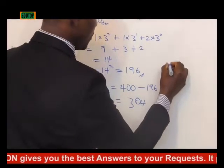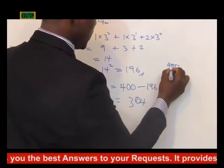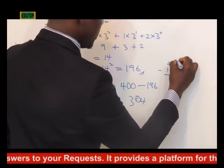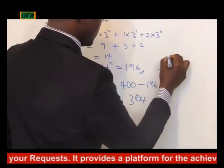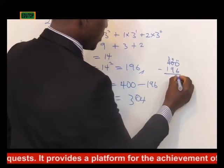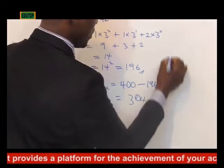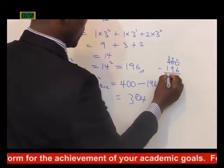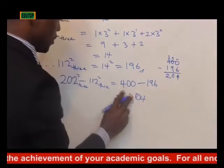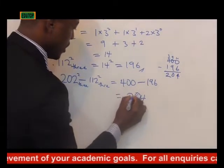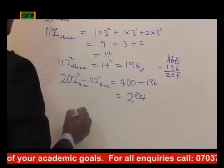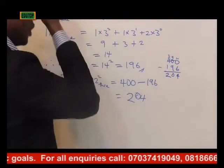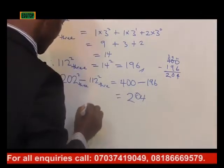If you have to do rough work, that would be 400 minus 196. This would be: 10 minus 6 gives us 4, 9 minus 9 is 0, and 3 minus 1 is 2. So that is 204, not 304. We will now convert this 204 back to base 3.